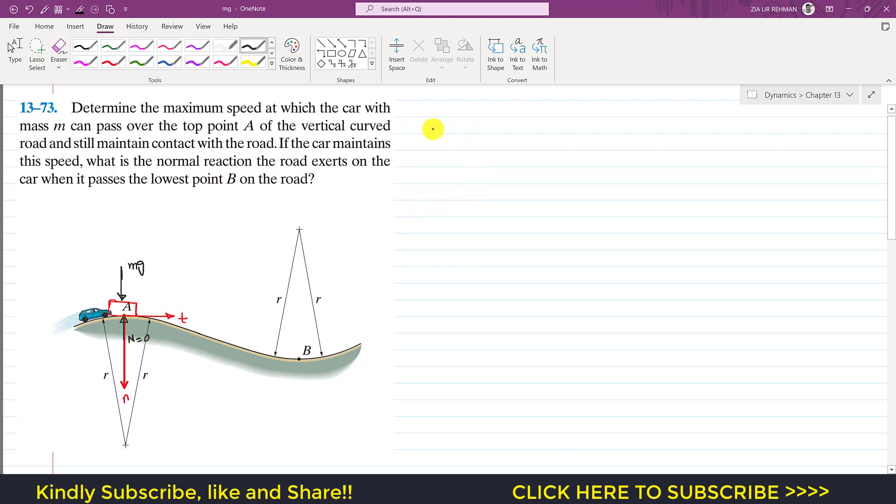So now if we apply at point A, if we apply the summation of forces along the normal axis, the normal axis is equal to m a_n. So as we can see that only mg force, the weight is acting vertically downward, which is the positive direction. So we will write mg, and this will be equal to mass, and a_n, and a_n is v squared divided by r.